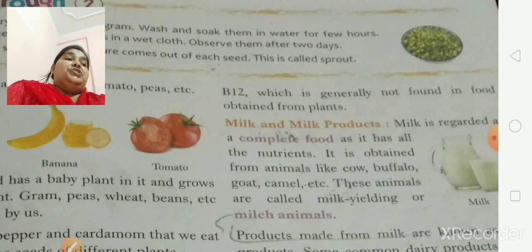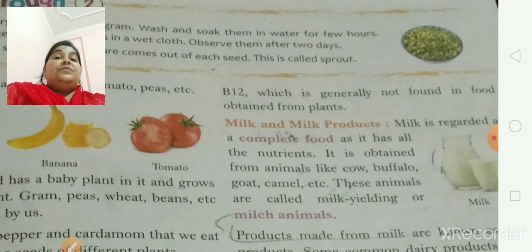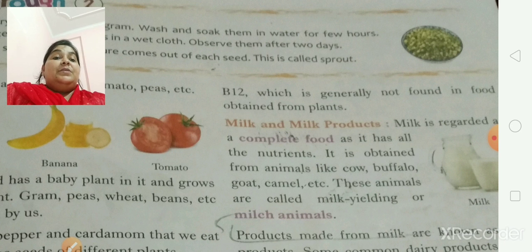Now we are going to read about milk and milk products. Milk is regarded as a complete food as it has all the nutrients. It is obtained from animals like cow, buffalo, goat, camel, etc. These animals are called milk-yielding animals or milk animals. Some common dairy products which we use in daily life are cheese, cream, butter and ghee, etc. These are the products which are made from milk.